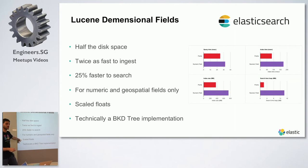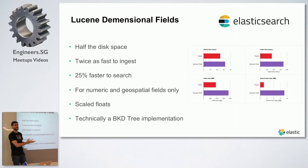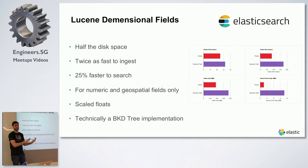We also introduced half precision numbers. If you collect metrics like CPU consumption or memory consumption, you get percentages like 37.5%. Previously you paid the price of a float — at least 4 bytes — for a two-digit precision number. We introduced scaled floats: internally we store them as integers. So again it's faster to read, faster to write, and smaller on disk.